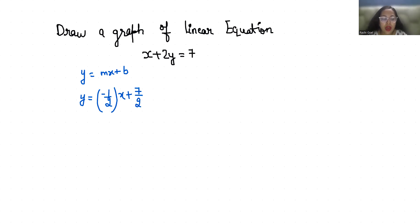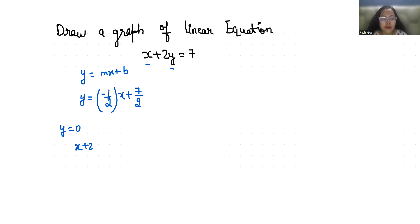Now we are going to find the intercepts of x and y. To find the x-intercept, we put y equals 0. So x plus 2y equals 7 becomes x plus 2 times 0 equals 7, so x is 7. When y is 0, x is 7.